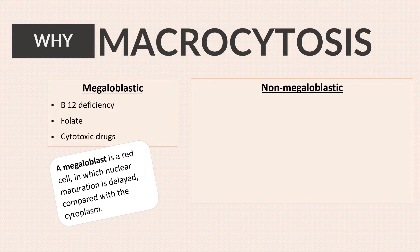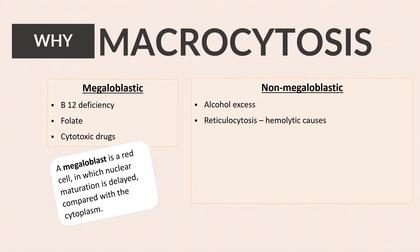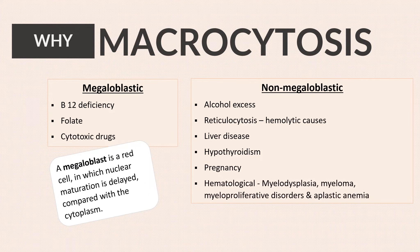Another cause of megaloblastic red cells is cytotoxic drugs. Non-megaloblastic causes include alcohol excess, reticulocytosis in conditions causing hemolysis, liver disease, hypothyroidism, and pregnancy. Hematological diseases such as myelodysplasia, myeloma, myeloproliferative disorders, and aplastic anemia can also have macrocytosis.